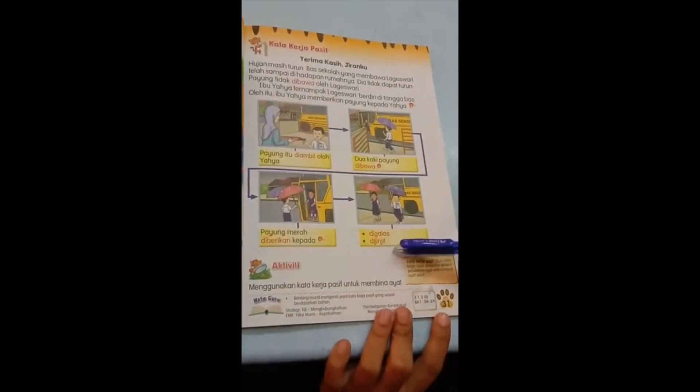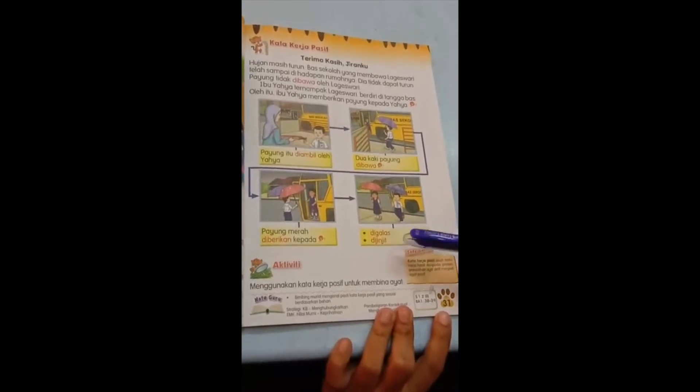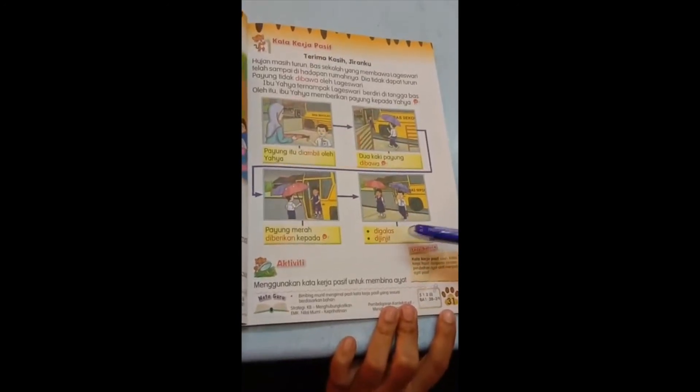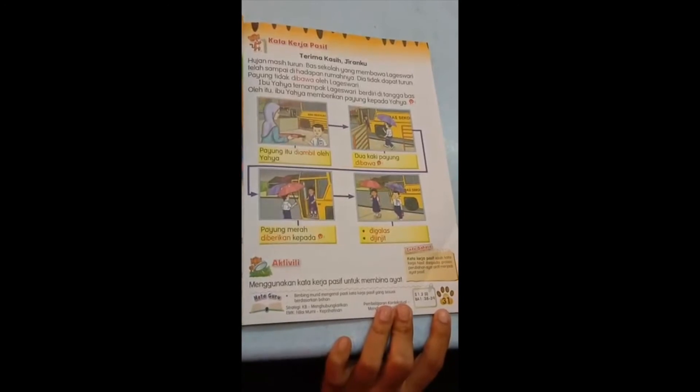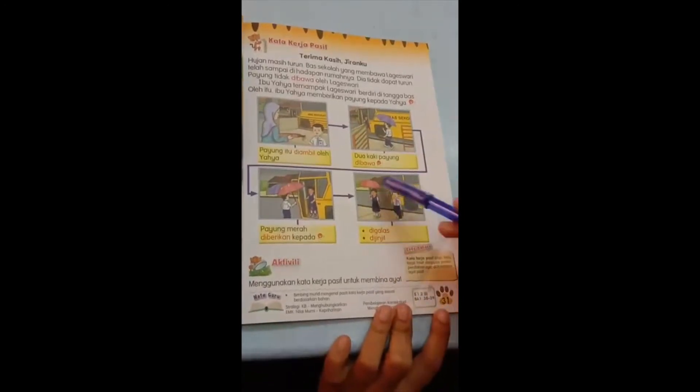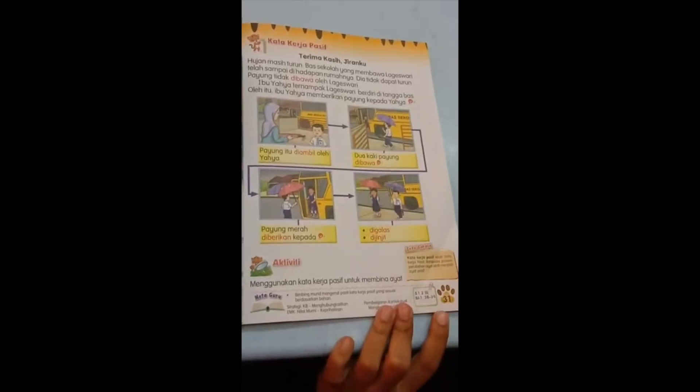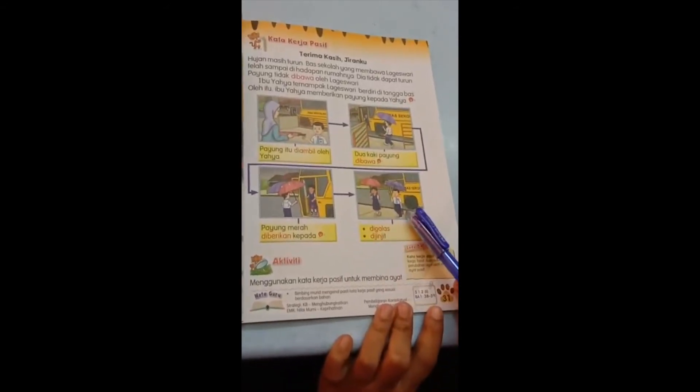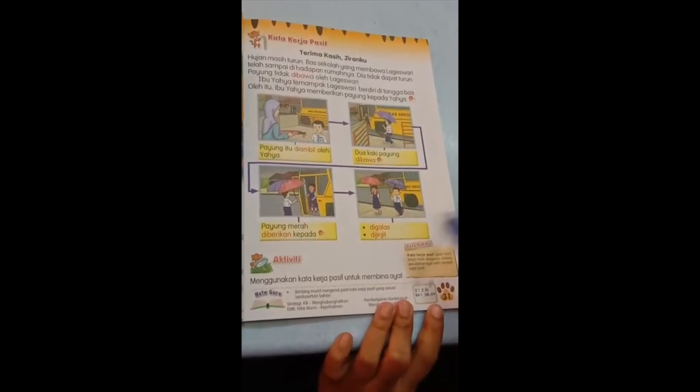What happened? They only give you the kata kerja. One is digalas. One is dijinjit. These are two new words. Teacher will tell you the meaning. But I want you to come up with the sentence. Digalas means the way of you carrying a school bag. Dijinjit is you are carrying something in the hand.